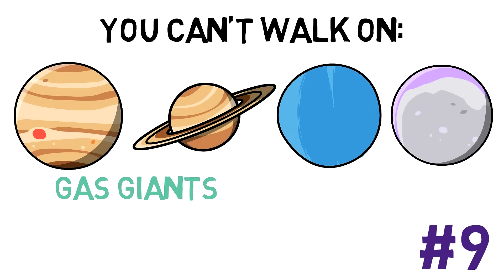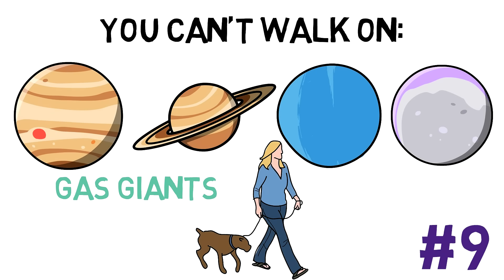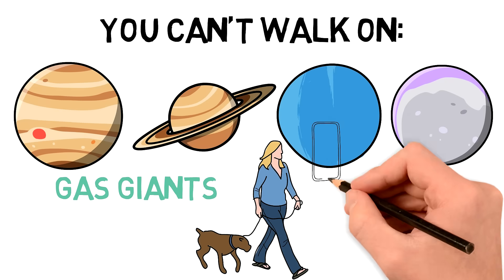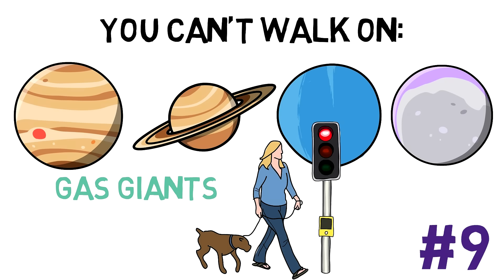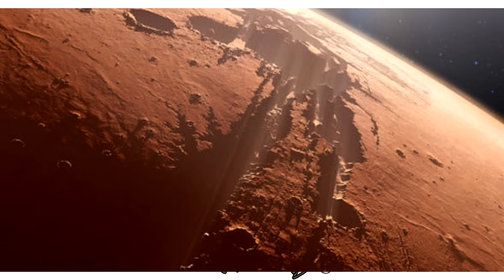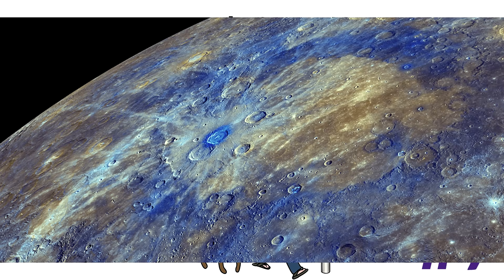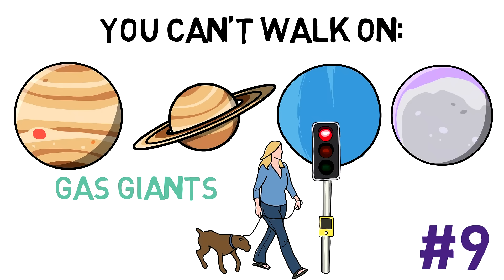So, if we ever colonize those planets, our settlements in them would have to be straight out of a science fiction movie, with some type of cloud cities or submerged bases. The other three planets, Mercury, Venus, and Mars also have other obstacles to our presence on them, just like we saw with Venus before, but that's a whole other topic.